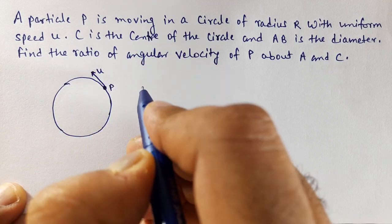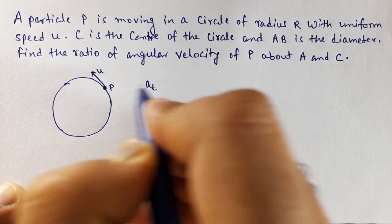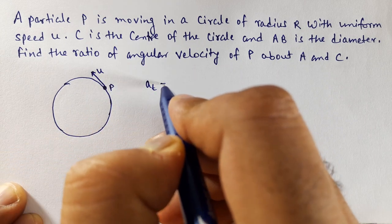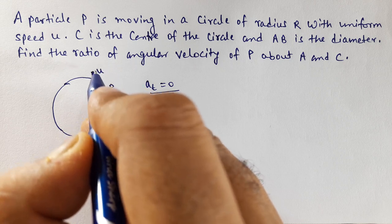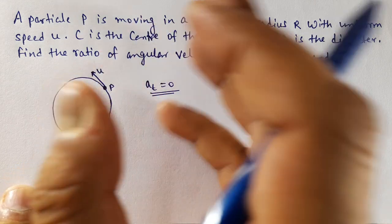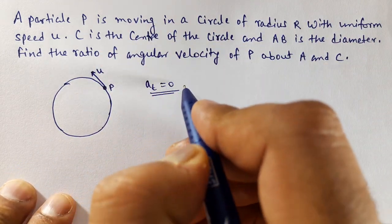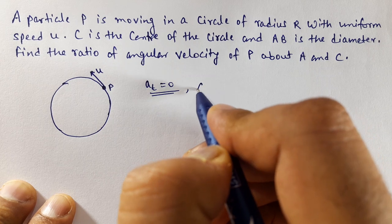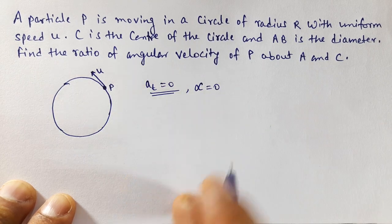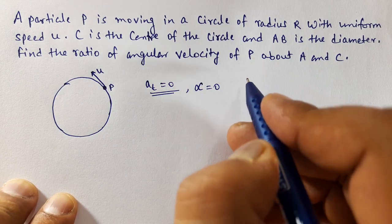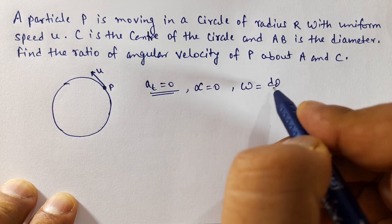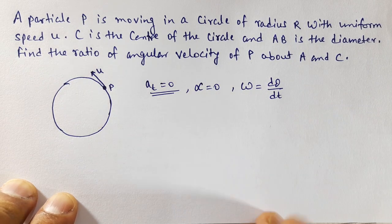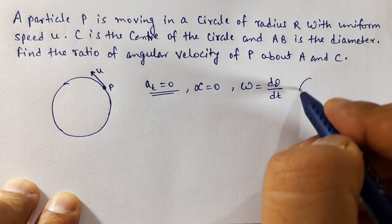So if speed is uniform, that means tangential acceleration is 0. Tangential acceleration is 0, that is why U is uniform. If acceleration is 0, then angular acceleration will also be 0. And angular velocity is the rate of change of angle with respect to time for a particle in circular motion.